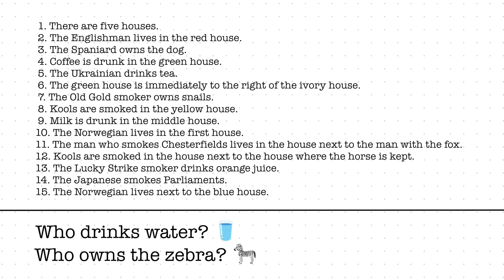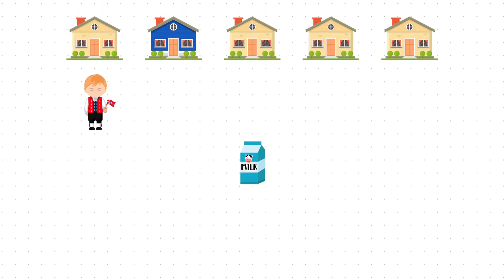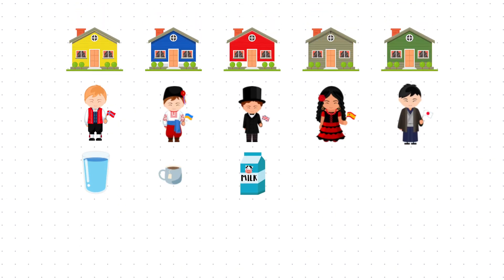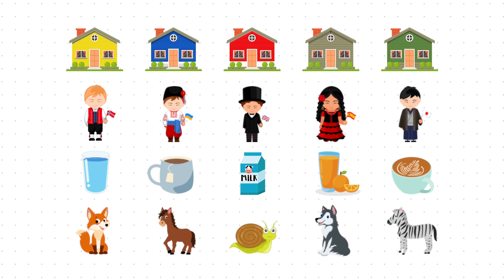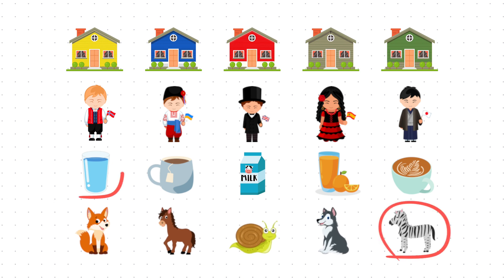To solve the puzzle, you must use all available clues to logically deduce where each person lives, what they drink, and which pet they own. This puzzle is commonly attributed to Albert Einstein, who allegedly claimed that only 2% of people could solve his riddle. There is actually no solid evidence that he invented the riddle, but it's true that these puzzles are quite challenging — and not just for us humans, but also for many AI systems.